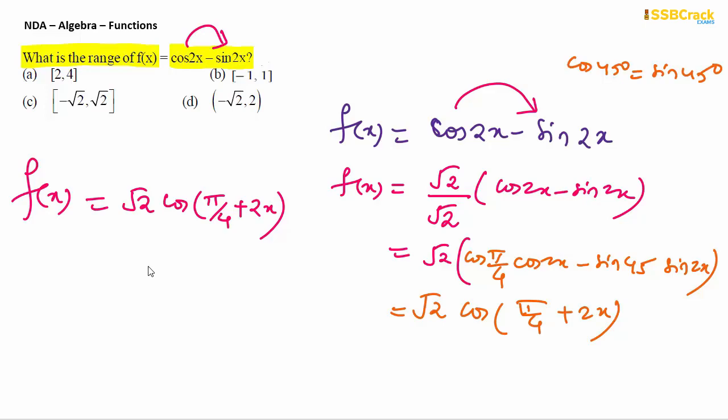Now your function has changed from two trigonometric function difference to a single function: root 2 times cos of (pi by 4 plus 2x). For single trigonometric function ranges, you have to keep them in your mind - there's no shortcut. You have to prepare standard trigonometric functions and inverse trigonometric function domains and ranges. Now take the range of this function, which totally depends on cos range. Cos range you should know is minus 1 to 1.